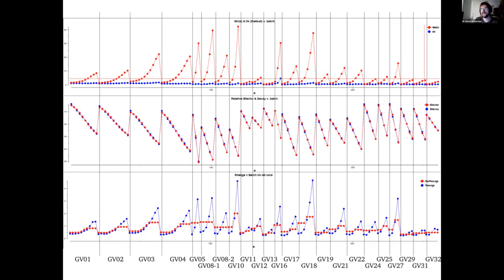At the time that we did this I took hours over it manually exploring different cutoffs with aimless but these days I can get essentially the same quality data set using automatic exclusions built into dial scale using the delta cc half metric.